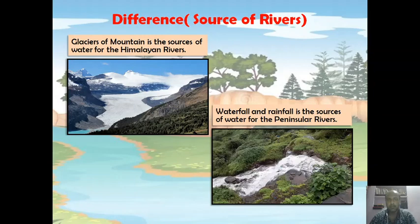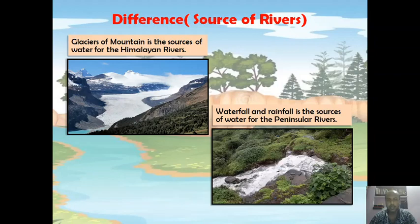Differences on the basis of source of rivers. Most North Indian rivers or the Himalayan rivers are snowfed. They are called snowfed because they have their origin from the glaciers of mountains — the glaciers melt and provide water to these rivers. On the other hand, the Peninsular rivers have their source from watersheds and also receive a good amount of water from rainfall, so we often call Peninsular rivers rainfed rivers.